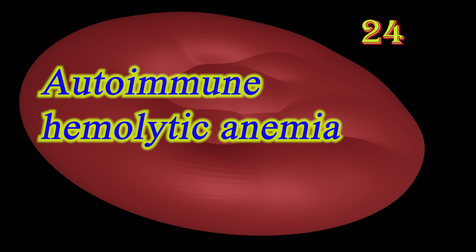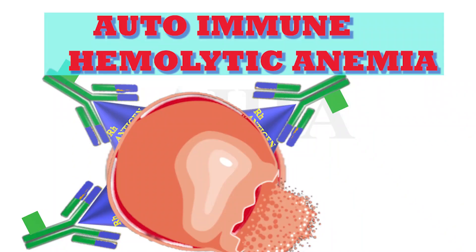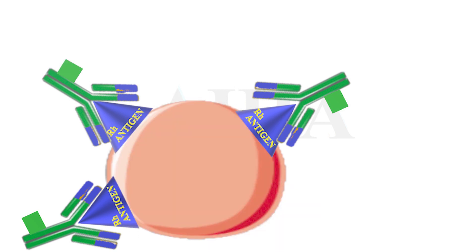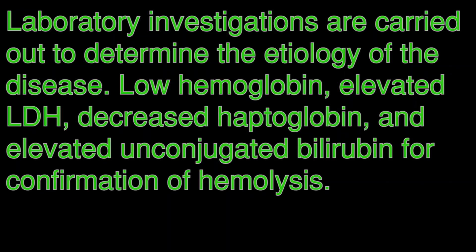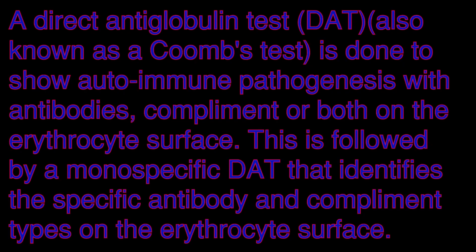Autoimmune hemolytic anemia occurs when antibodies against the person's own RBCs cause them to lyse, leading to decreased RBC count in circulation. The lifetime of the RBC is reduced to a few days. Primary cause is unknown; secondary causes include chronic lymphocytic leukemia, Epstein-Barr virus, cytomegalovirus, Mycoplasma pneumoniae, hepatitis, and HIV.